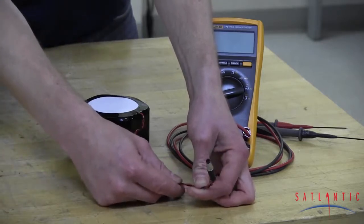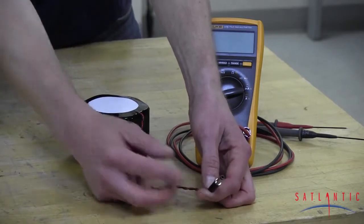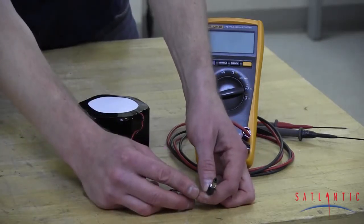Never grab the conductors themselves and pull on them. You could damage the barrel conductor, or worse, you could damage the female jack that's inside the internal battery compartment.